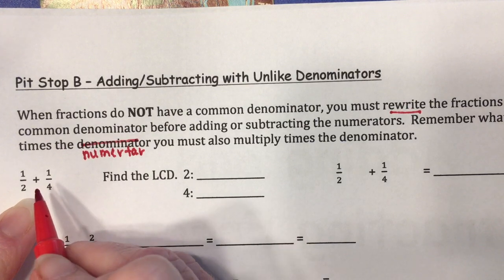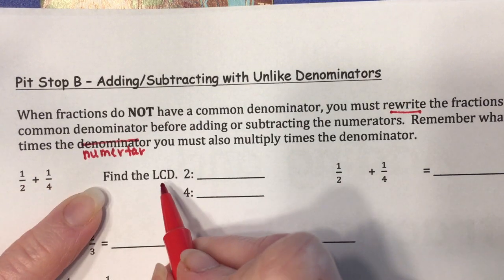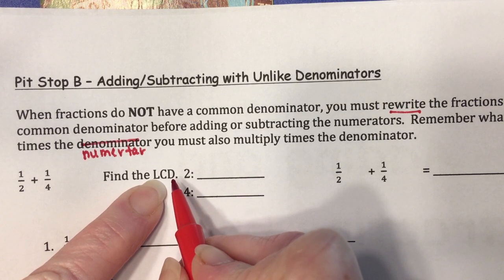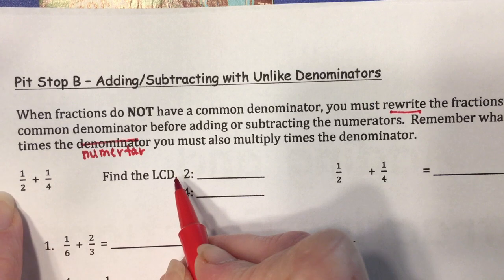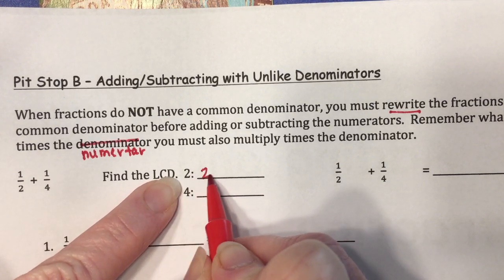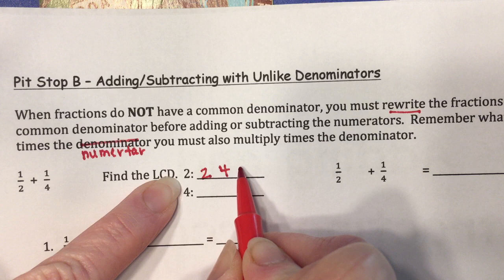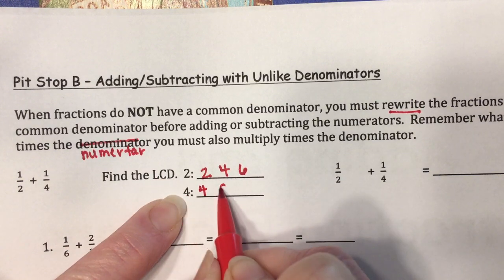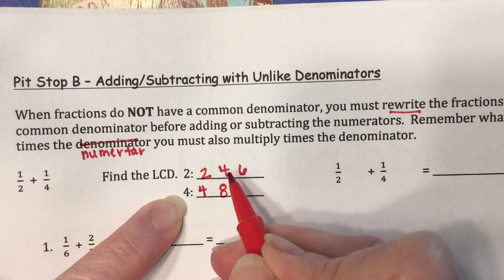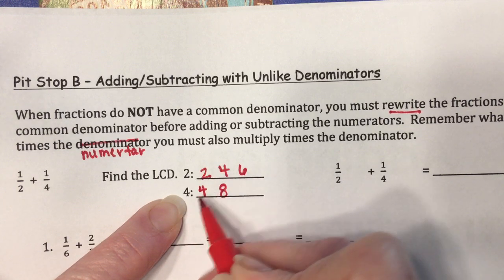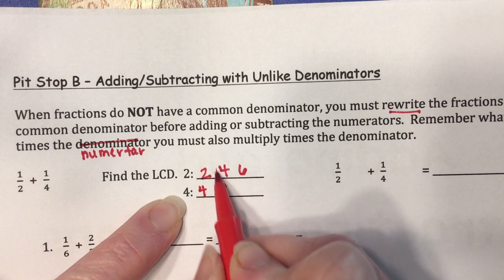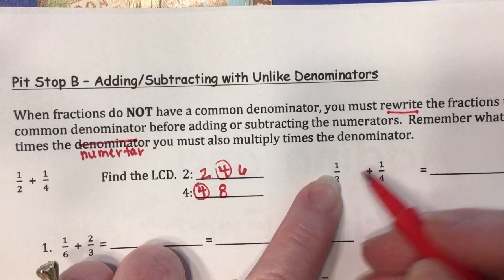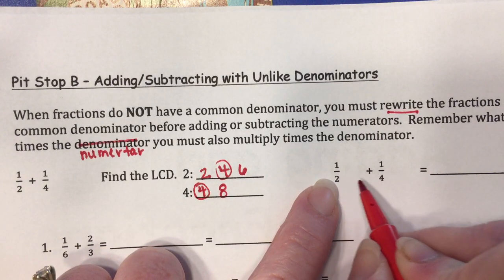Here's an example: we have one-half plus one-fourth. We want to find the least common denominator — that's what LCD stands for — also called the least common multiple. Looking at the multiples of two: 2, 4, 6... and the multiples of four: 4, 8... Since they both have four in common, four is going to be my least common denominator. That means I want to change the two in the denominator into a four.